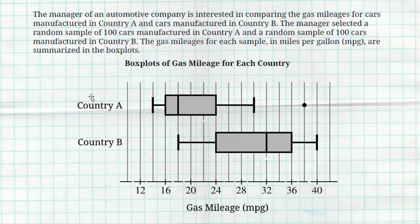So we see two parallel box plots, one for Country A, one for Country B. Cool thing about box plots is we see the five number summary: the min, the max, Q1, Q3, the median, and we also notice there's an outlier for Country A.